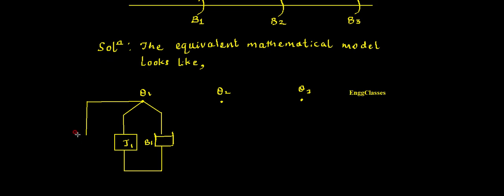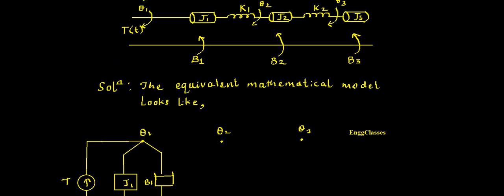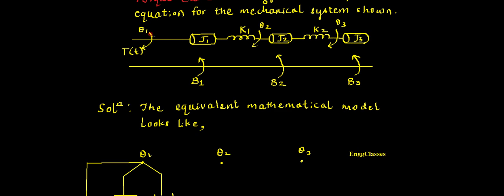The torque applied at theta1 is in this direction, and ultimately all these things are connected to ground. Now, between theta1 and theta2 there is the spring constant k1, so I need to draw that spring constant k1 connecting the two nodes.